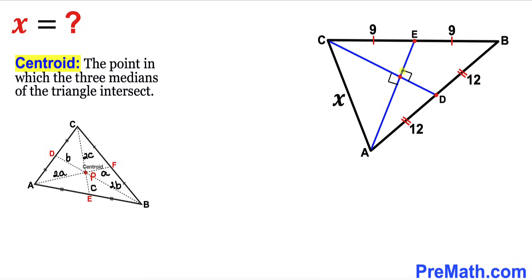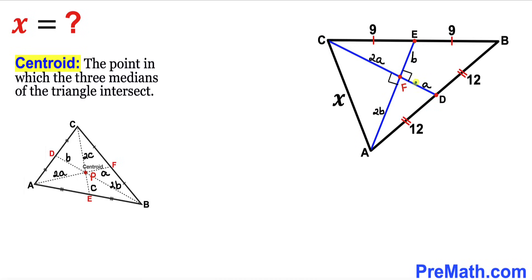In our case, the point of intersection is the centroid, which I'll label as point F. If this side length is lowercase a, then this side length is 2 times a. Likewise, if this side length is lowercase b, then this side length is 2 times b. Since these angles are 90 degrees, these angles are 90 degrees as well.